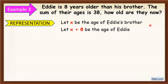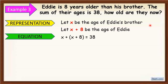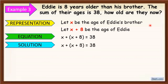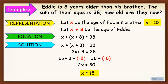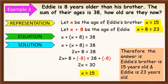After we make the representation, let's make an equation: x plus x plus 8 is equal to 38. Let's find the solution. It will become 2x plus 8 is equal to 38. Apply APE — add both sides with negative 8 to isolate 2x — so 2x is equal to 30. Apply MPE — divide both sides by 2 — we get x is equal to 15. So the age of Eddie's brother is 15, and therefore the age of Eddie is 23.